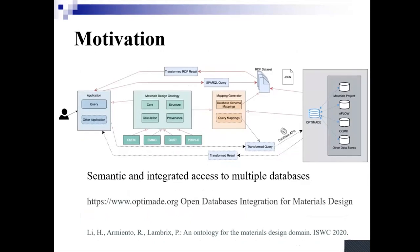The way that we use this ontology is in an ongoing project where we aim to provide semantic and integrated access to materials databases. We currently work on the databases in the OptiMate consortium, where the idea is that by using the ontology, and by creating mappings between the schema of the databases and the ontology, we will allow querying over multiple databases and allow queries to take into account relations in the ontologies. There are some examples of queries that could not be asked using the current interfaces of the databases, but which you can ask and get results using the ontology, because the information is actually in these databases.